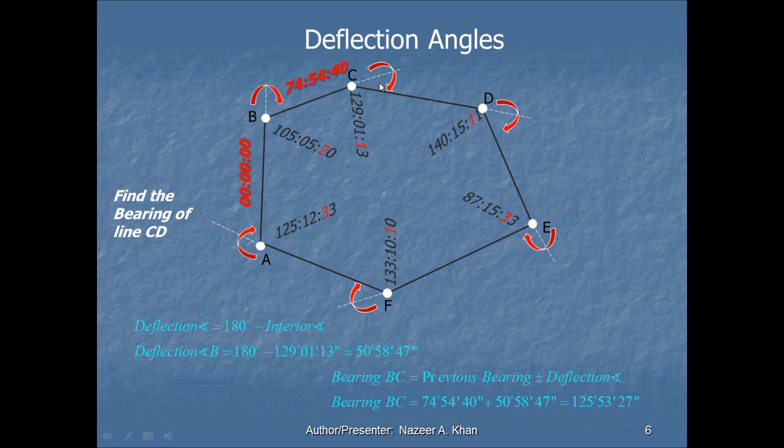However, if we were to go and calculate a second bearing, it wouldn't work out to deflection angle itself. Let's go and find the bearing of CD. Calculation of the deflection angle at that point, 180 minus 129 degrees 01 minutes 13 seconds, and that would give us a deflection angle of 50 degrees 58 minutes 47 seconds. I am rotating clockwise, so therefore, I'm going to add it to the previous bearing, which is 74 degrees 54 minutes 40 seconds. 74 degrees 54 minutes 40 seconds plus 50 degrees 58 minutes 47 seconds will give you 125 degrees 53 minutes 57 seconds. So that's going to be the new bearing of CD. And that is the same procedure you would use all the way around to get all of the bearings of this closure.